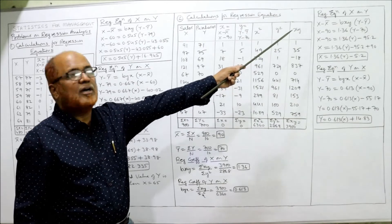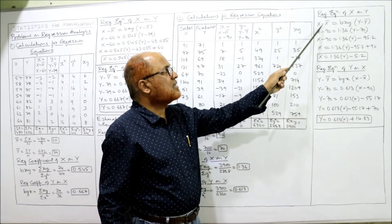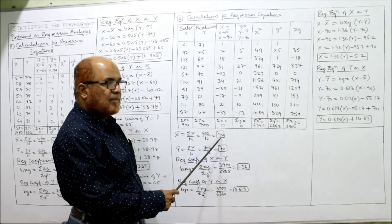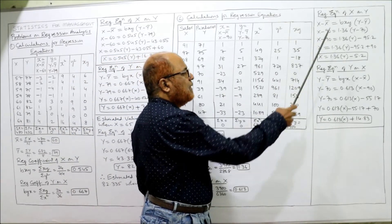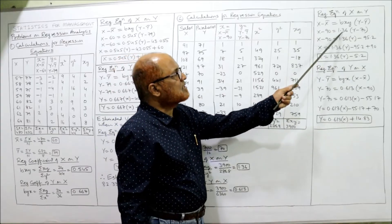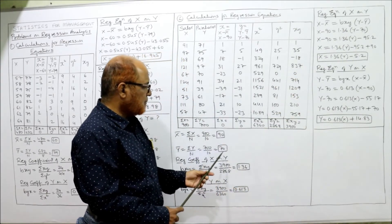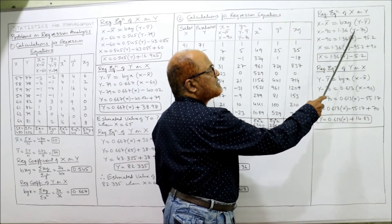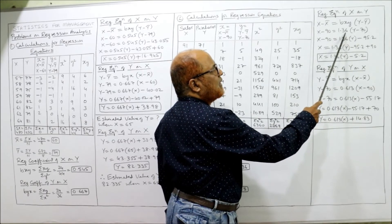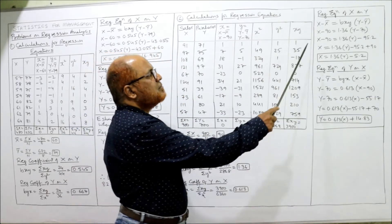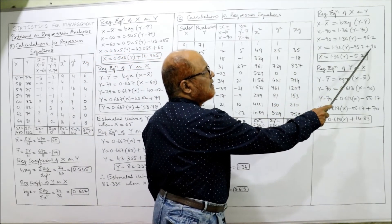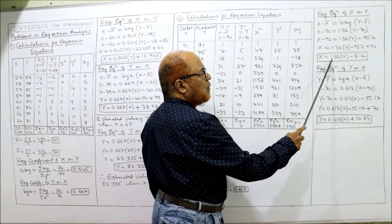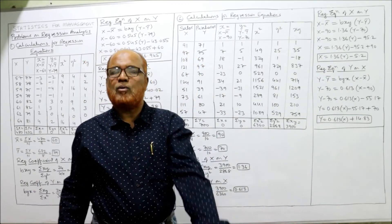For the regression equation of X on Y: X − X-bar = BXY × (Y − Y-bar). Substituting: X − 90 = 1.36 × (Y − 70). Opening the bracket: X − 90 = 1.36Y − 1.36×70 = 1.36Y − 95.2. Taking −90 to the right-hand side: X = 1.36Y − 95.2 + 90, giving X = 1.36Y − 5.2. This is the regression equation of X on Y.